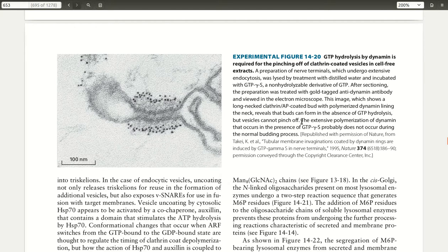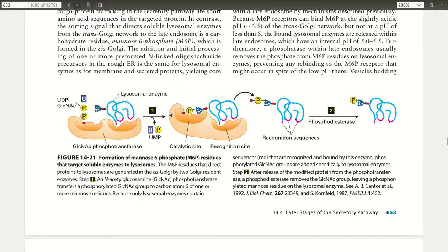You see that these vesicles are still tethered to the trans Golgi network, and this basically just proves that dynamin is actually operating through the hydrolysis of GTP on the successful pinching off or budding of these clathrin-coated vesicles to the late endosome.